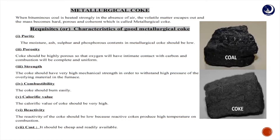The characteristics of good metallurgical coke are: purity — moisture, ash, sulfur, and porous contents should be low; porosity — coke should be highly porous so that oxygen has intimate contact with carbon and combustion is complete; strength — very high mechanical strength to withstand the high pressure of overlaying material in the furnace; combustibility — should burn easily; calorific value — should be very high; reactivity — should be low, as reactive coke produces dangerously high combustion temperatures; and cost — should be cheap and readily available.